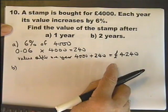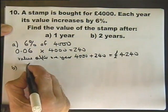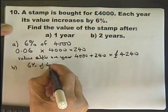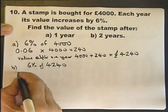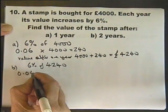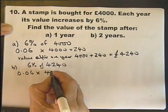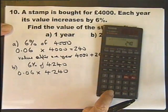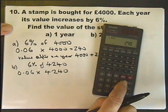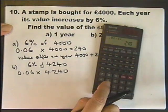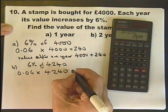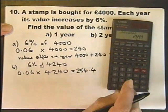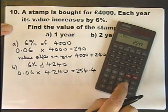During the second year it's going to make 6% of that, so I've got to work out what is 6% of this new value. Again, using the decimal because it's a calculator paper, in my opinion that really is the easiest way of doing it. 0.06 multiplied by 4,240 equals £254.4.